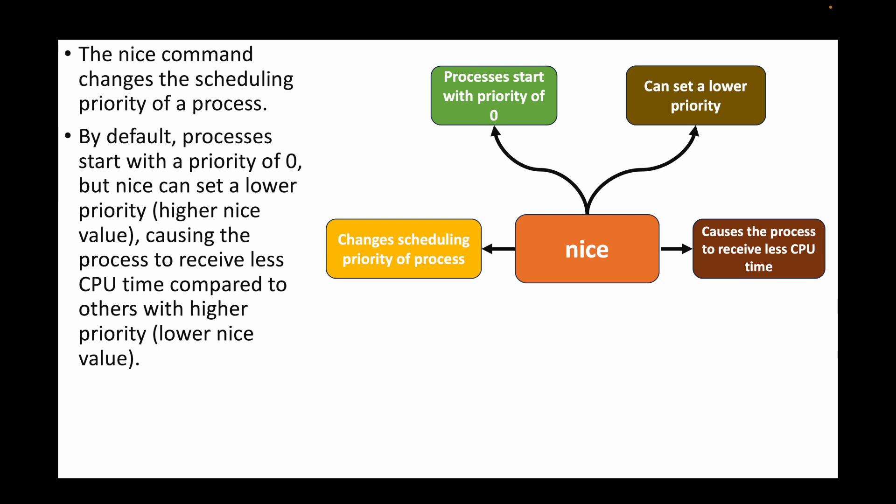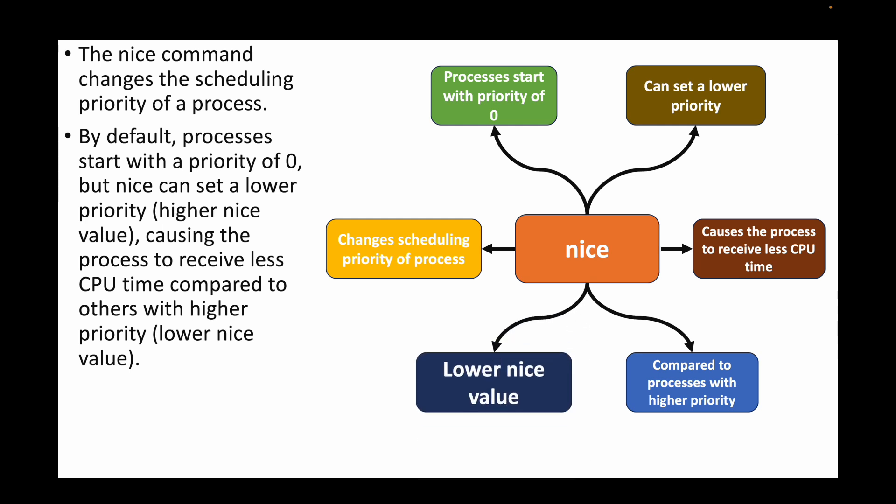So the lower the priority, the less CPU time that process gets compared to higher-priority processes. A higher priority corresponds to a lower nice value. In summary: lower the nice value, higher the priority; higher the nice value, lower the priority.